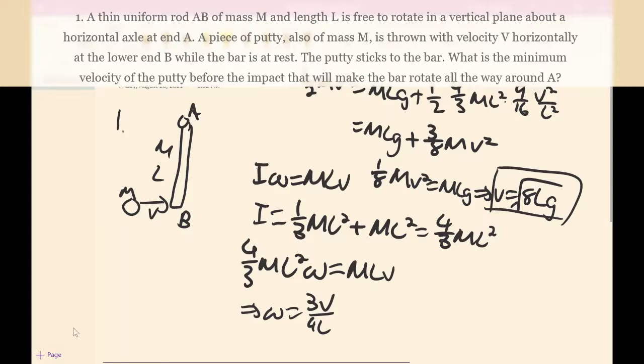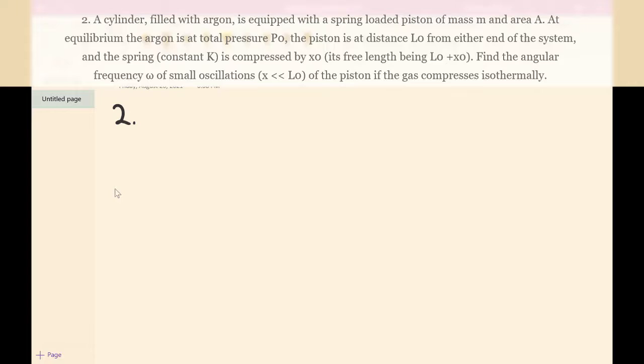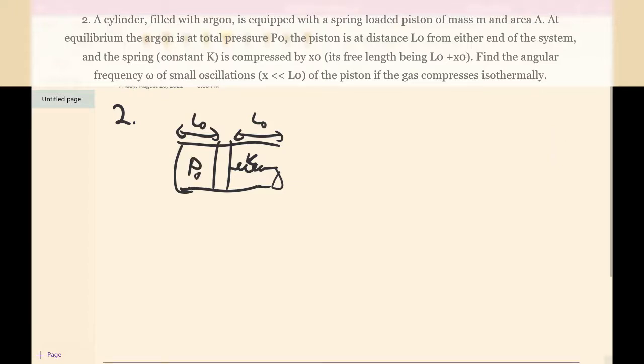Okay, so then I'll do the second problem. For the second problem, we have a cylinder that looks like this, and it's filled with argon and it has a spring here with spring constant K. These two lengths are both L0, and the pressure at equilibrium is P0, and the spring is compressed by length x0. So we want to find the angular frequency omega of the small oscillations.